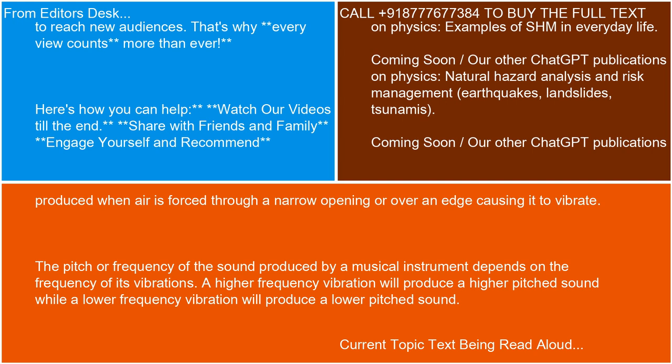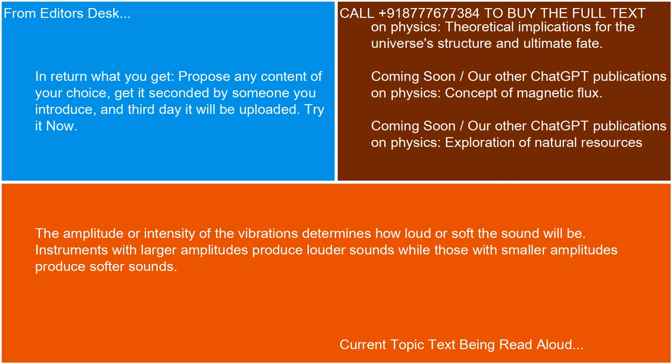The pitch or frequency of the sound produced by a musical instrument depends on the frequency of its vibrations. A higher frequency vibration will produce a higher-pitched sound, while a lower frequency vibration will produce a lower-pitched sound. The amplitude or intensity of the vibrations determines how loud or soft the sound will be. Instruments with larger amplitudes produce louder sounds, while those with smaller amplitudes produce softer sounds.